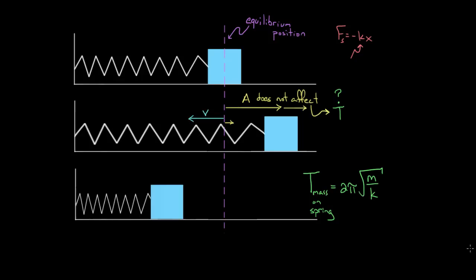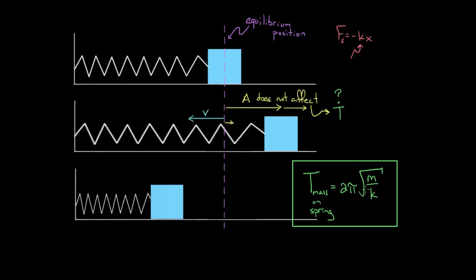This is the formula for the period of a mass on a spring. The derivation typically involves calculus, so I won't go through it here. If you're curious, check out the videos on simple harmonic motion using calculus to see how this equation comes about. For now, we'll just take a tour of this equation.